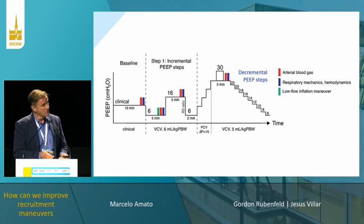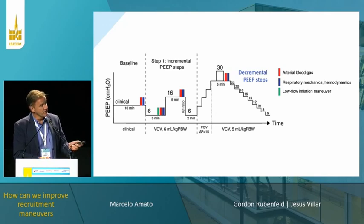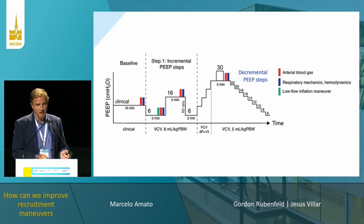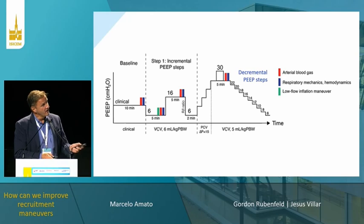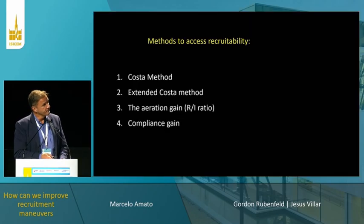I'll comment on this later. At 30 of PIP with 15 of delta pressure, you reach 45 — so the maximum pressure is 45 cmH₂O. Then we had the decremental PIP steps.